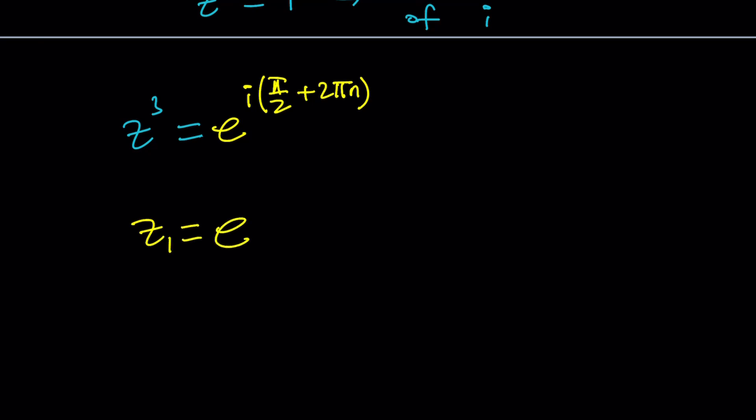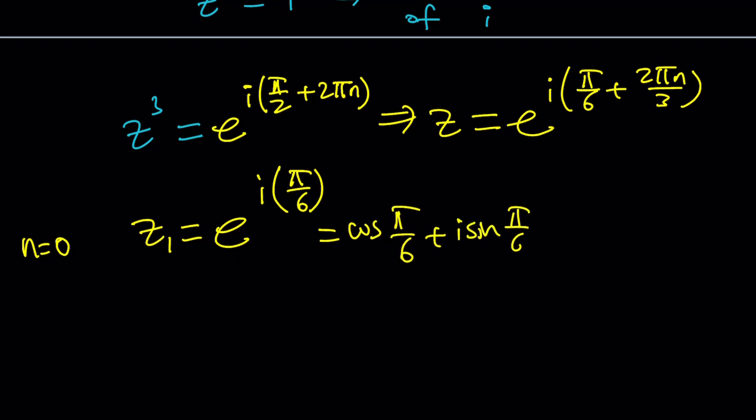And then to find the cube root, we're going to divide this by three. So everything will be divided by three. The first root is going to be E to the power I. I can find the generic cube root as E to the power I times pi over six plus two pi n over three. For N equals zero, I'm going to get I times pi over six, and that is cosine pi over six plus I sine pi over six. The second root is going to be E to the power I times five pi over six. This is going to be cosine five pi over six, which is 150 degrees, plus I sine five pi over six.